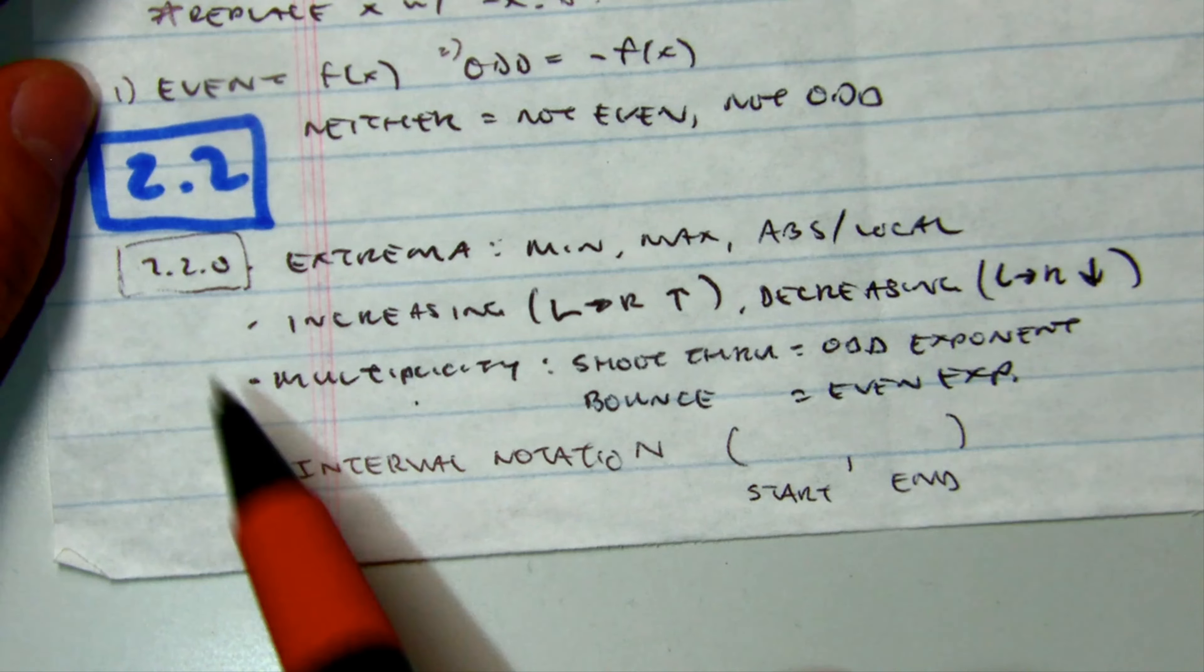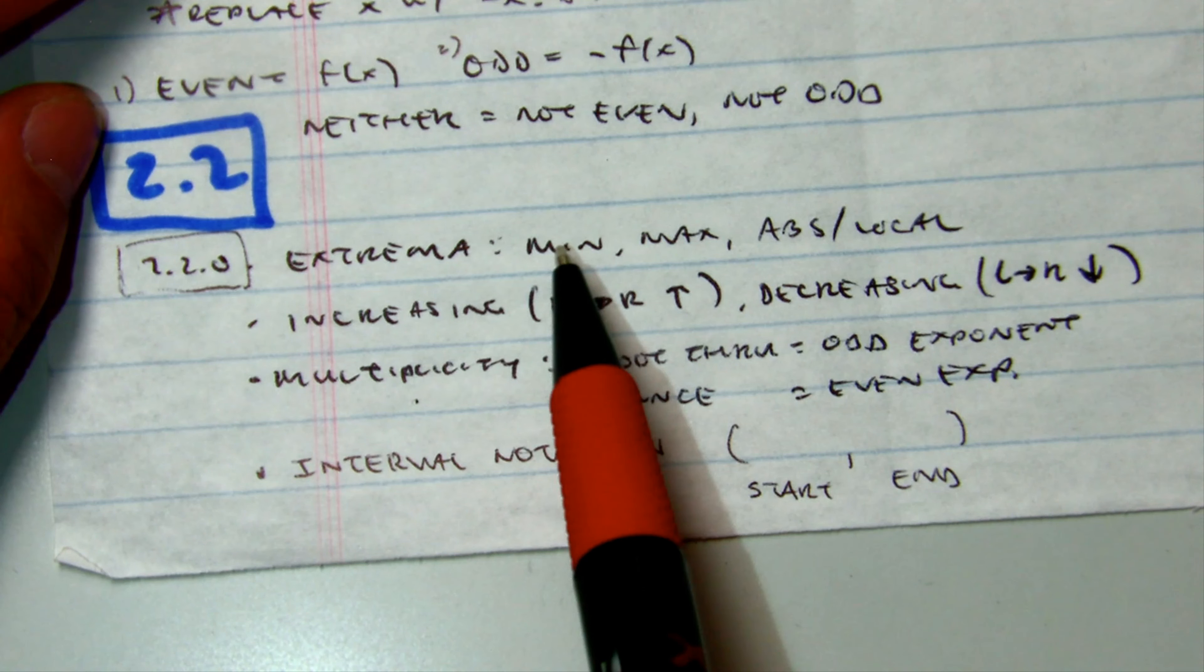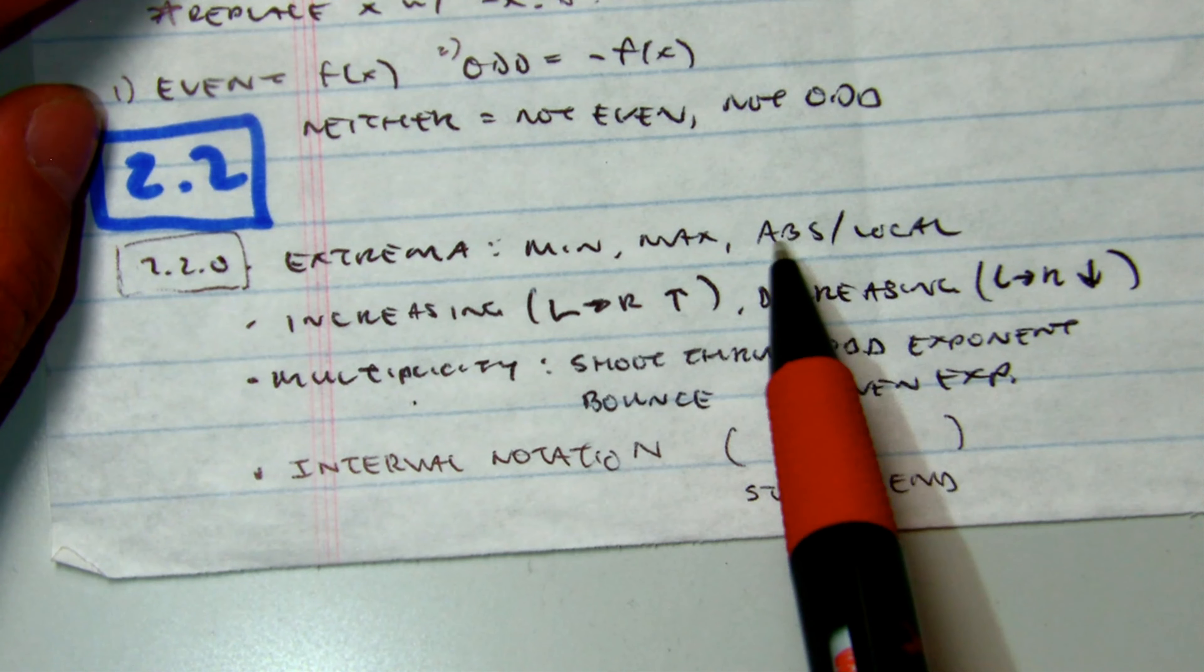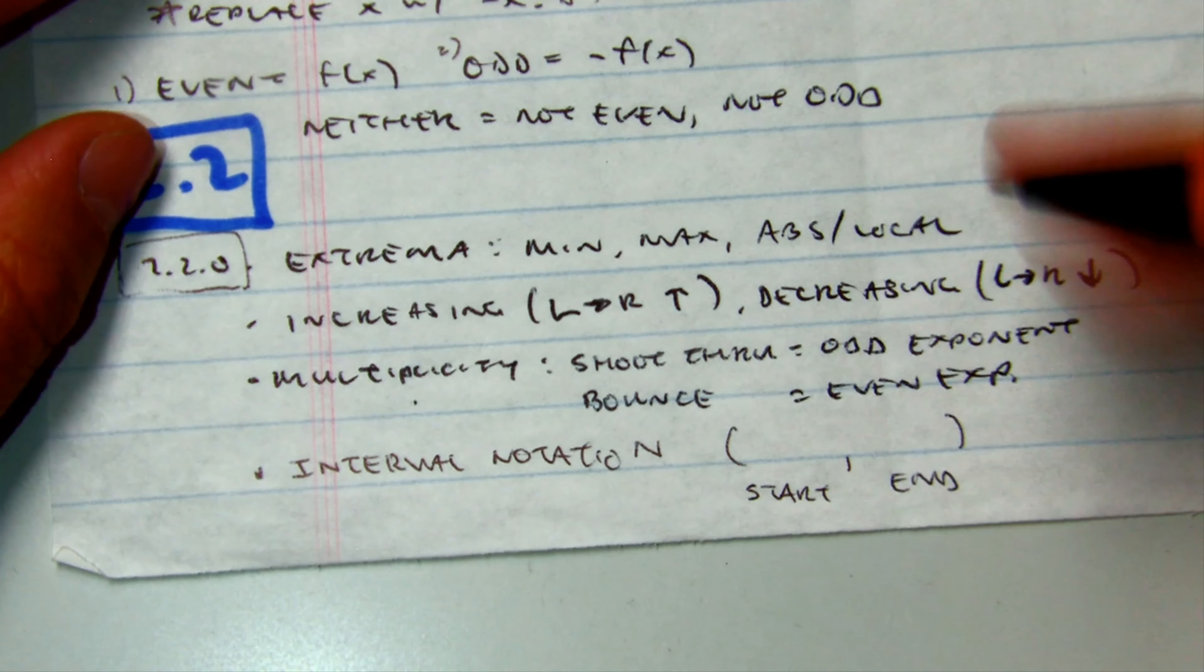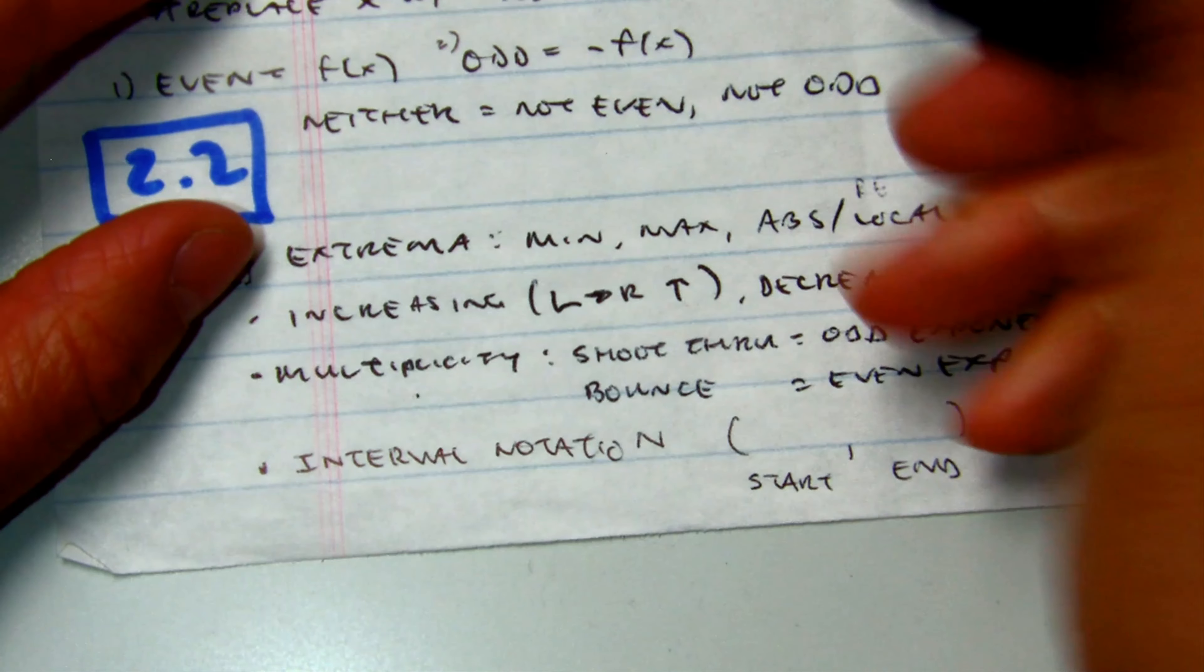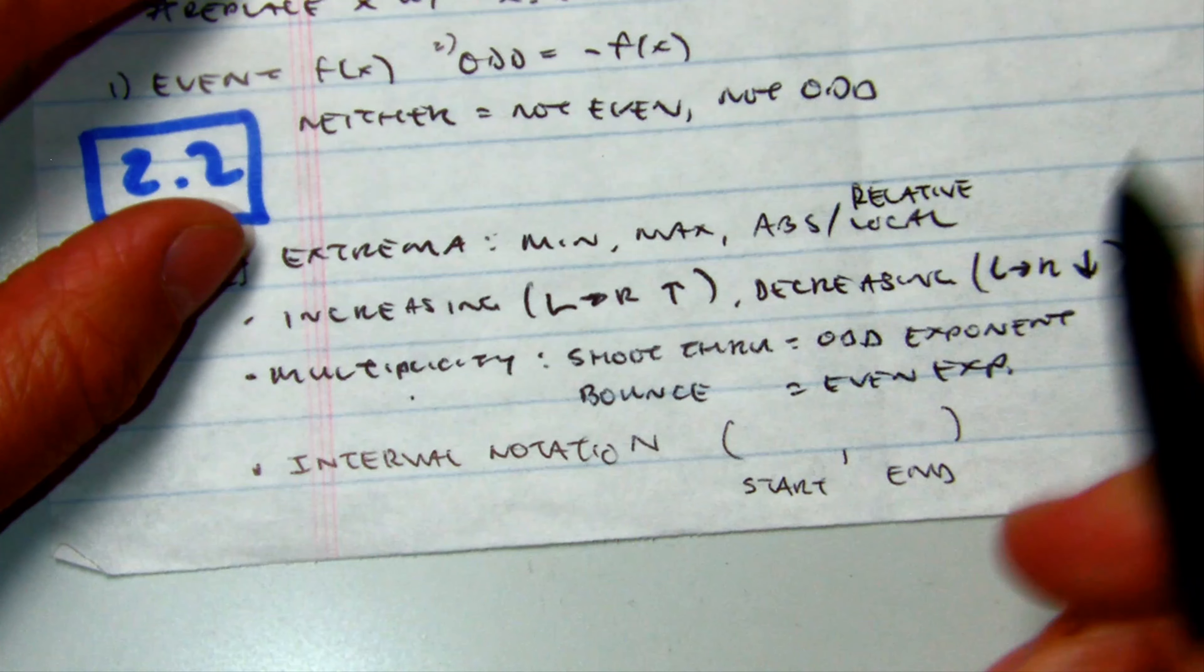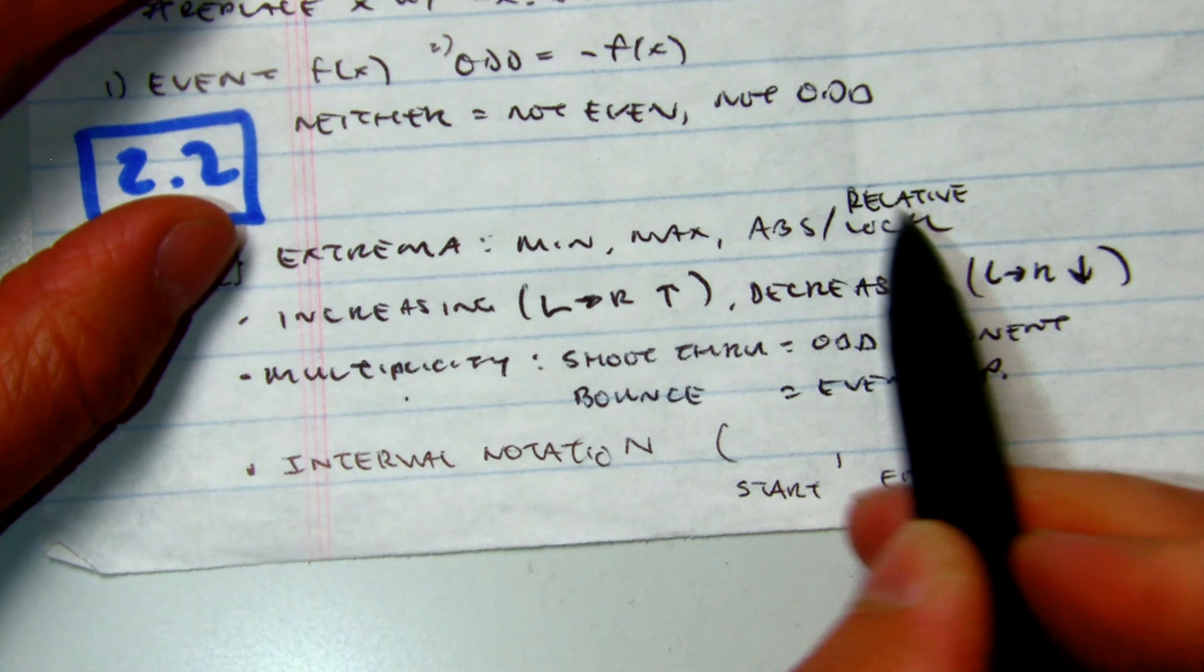Okay, 2.2, we talked about extrema. Minimum, maxima. That's the low, the high. Absolute is the highest point, like Mount Everest. Local or relative? Relative. Just in our local area, it's high, but there's something higher.